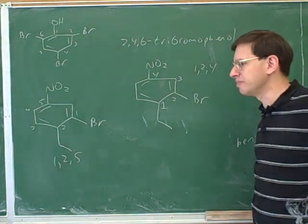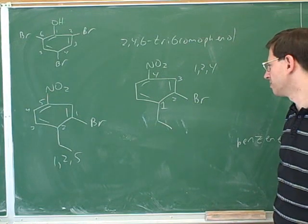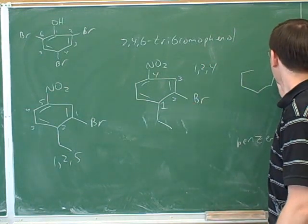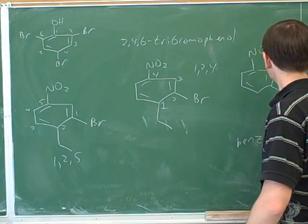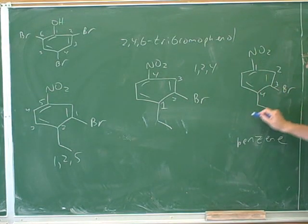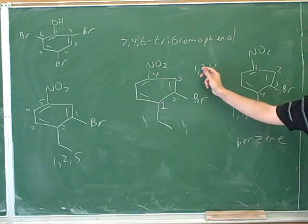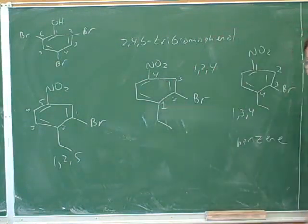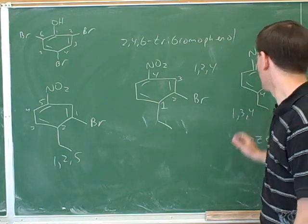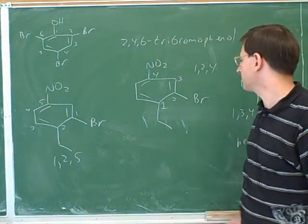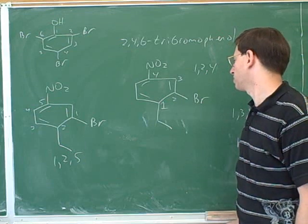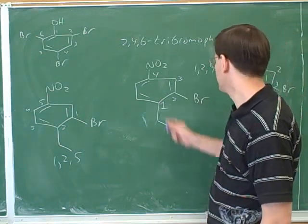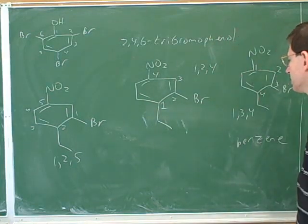Alphabetical ordering to determine the numbers is just our last resort. We only use alphabetization to determine the numbers if there's no other way. For completeness, we should consider one other possibility: if nitro gets number one, the numbers would be 1, 3, and 4. Well, 1, 2, and 4 is better than 1, 3, and 4 because 2 beats 3. So you might have to try out a bunch of different numbering systems to determine which gives the lowest set. The 1, 2, 4 is lower than 1, 3, 4 and lower than 1, 2, 5 — so it turns out the best choice is to give number one to the ethyl group.